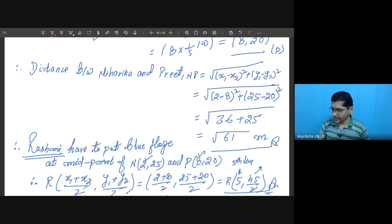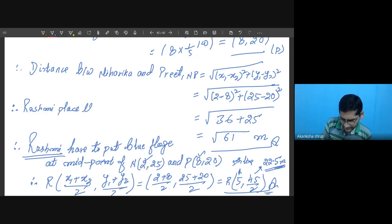So this location at this point, if you are just going to divide it, it becomes 22.5 meter along AD. So write: Rasmi places the flag on fifth line at 22.5 meter along AD.